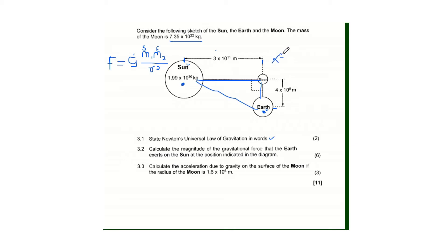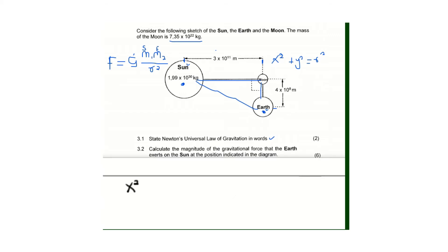Using Pythagoras' theorem: x² + y² = r², which means r = √(x² + y²). The two known distances will be our x and y, and the distance we are looking for is r.